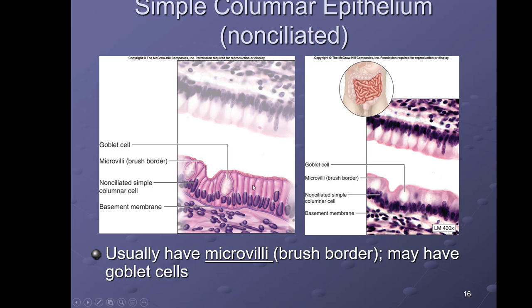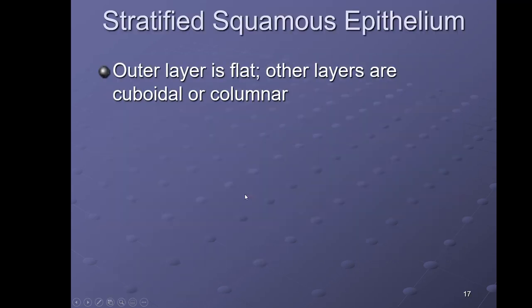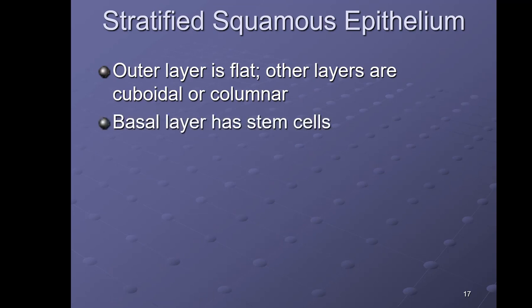There is also a ciliated form of simple columnar epithelium that has cilia instead of microvilli. For this course we will focus mainly on the non-ciliated simple columnar that has the microvilli. As far as the ciliated version, you just need to know that it exists.